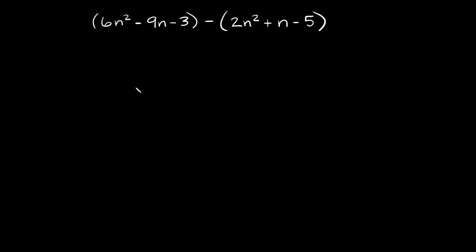The first thing you're going to do is actually drop the parentheses. Starting here we're going to have 6n squared minus 9n minus 3, and then here we're going to do two things actually — we're going to drop the parentheses but we're also going to change the sign on all of these terms.